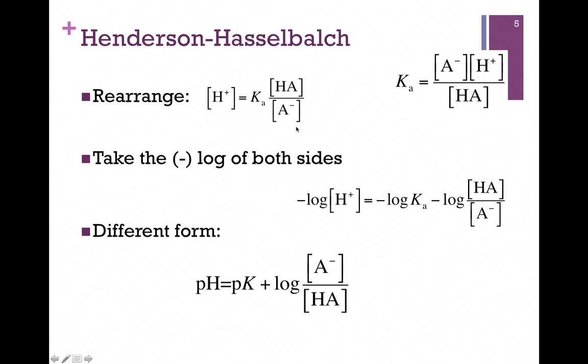We're going to rearrange that a little bit algebraically. And now let's do that negative log thing again. We're going to take the negative log of both sides. So now in our expression, you have the negative log of the H-plus concentration is equivalent to the negative log of the Ka minus the log of this ratio of HA over A-.